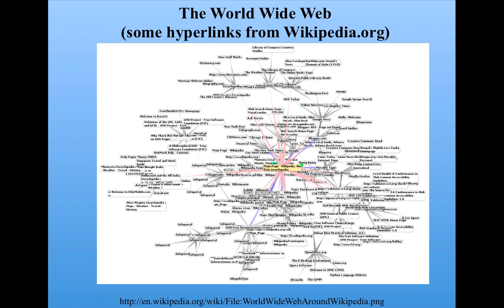The World Wide Web is a very familiar network for all of us. This shows some nodes, which are web pages or websites, and links, which represent hyperlinks. This is one very small part of the network that goes around the site Wikipedia. Again, you can see this structure of hubs — nodes that have many hyperlinks coming into or out of them — and nodes that are not hubs and don't have very many links coming into or out of them.